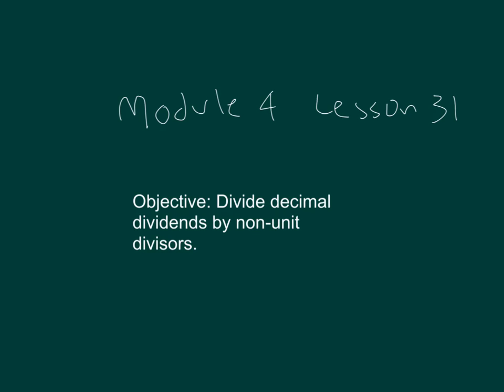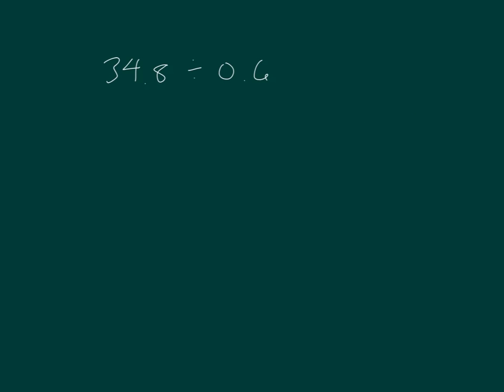The objective within this lesson is to divide decimal dividends by non-unit divisors. 34.8 divided by 0.6. Let's rewrite this division expression as a fraction.